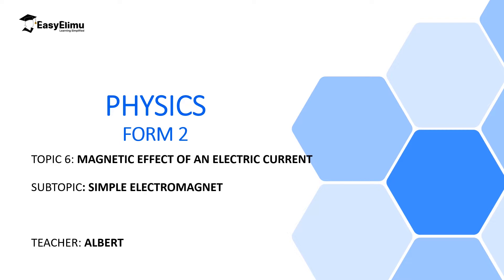Now in this lesson we are going to discuss a simple electromagnet. A simple electromagnet is a magnet which is obtained when we insert a soft magnetic material inside the solenoid which is carrying current. In this case the dipoles of this soft magnetic material are going to be aligned in one direction, giving it a north pole and south pole depending on the solenoid's poles.